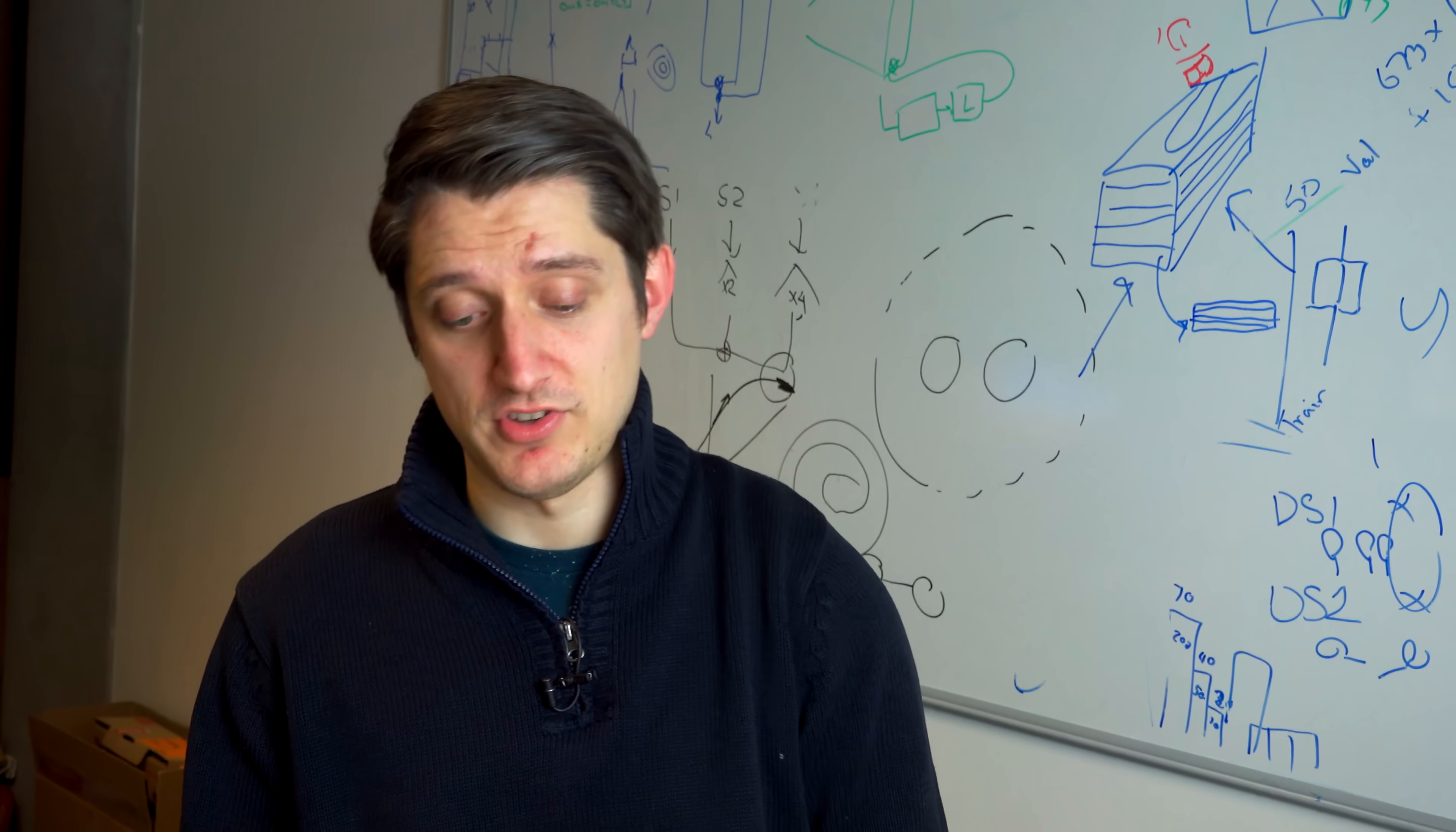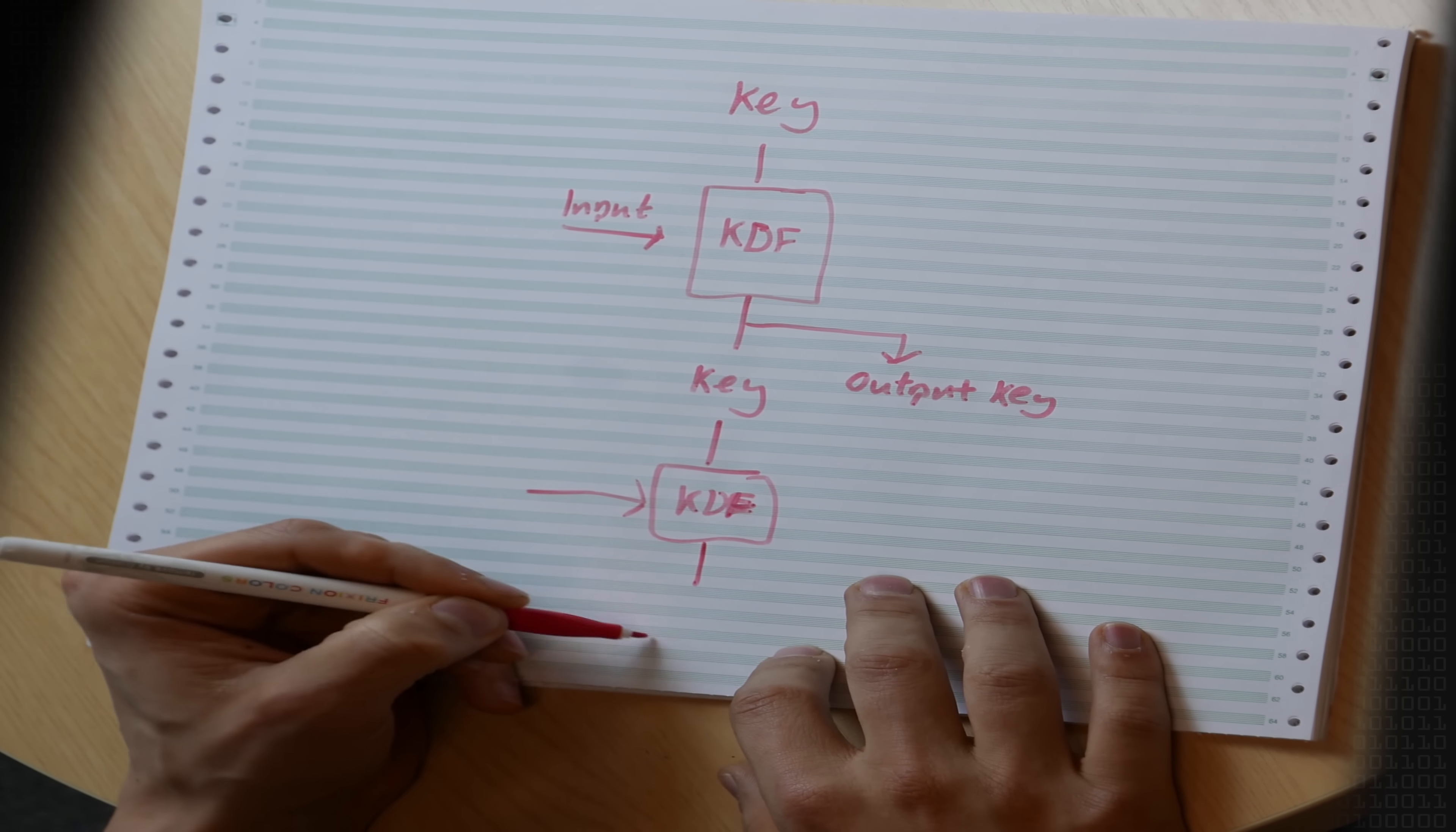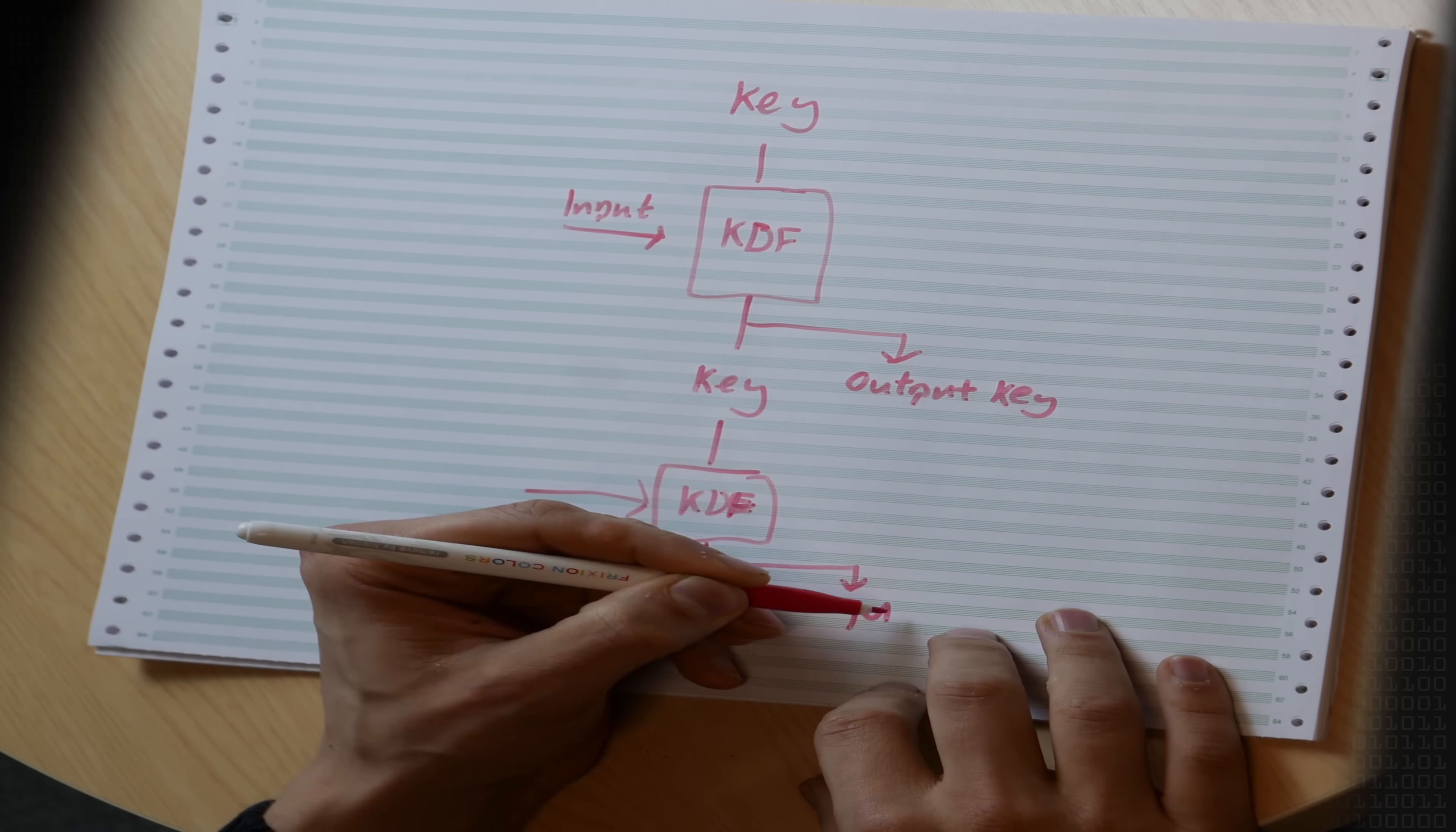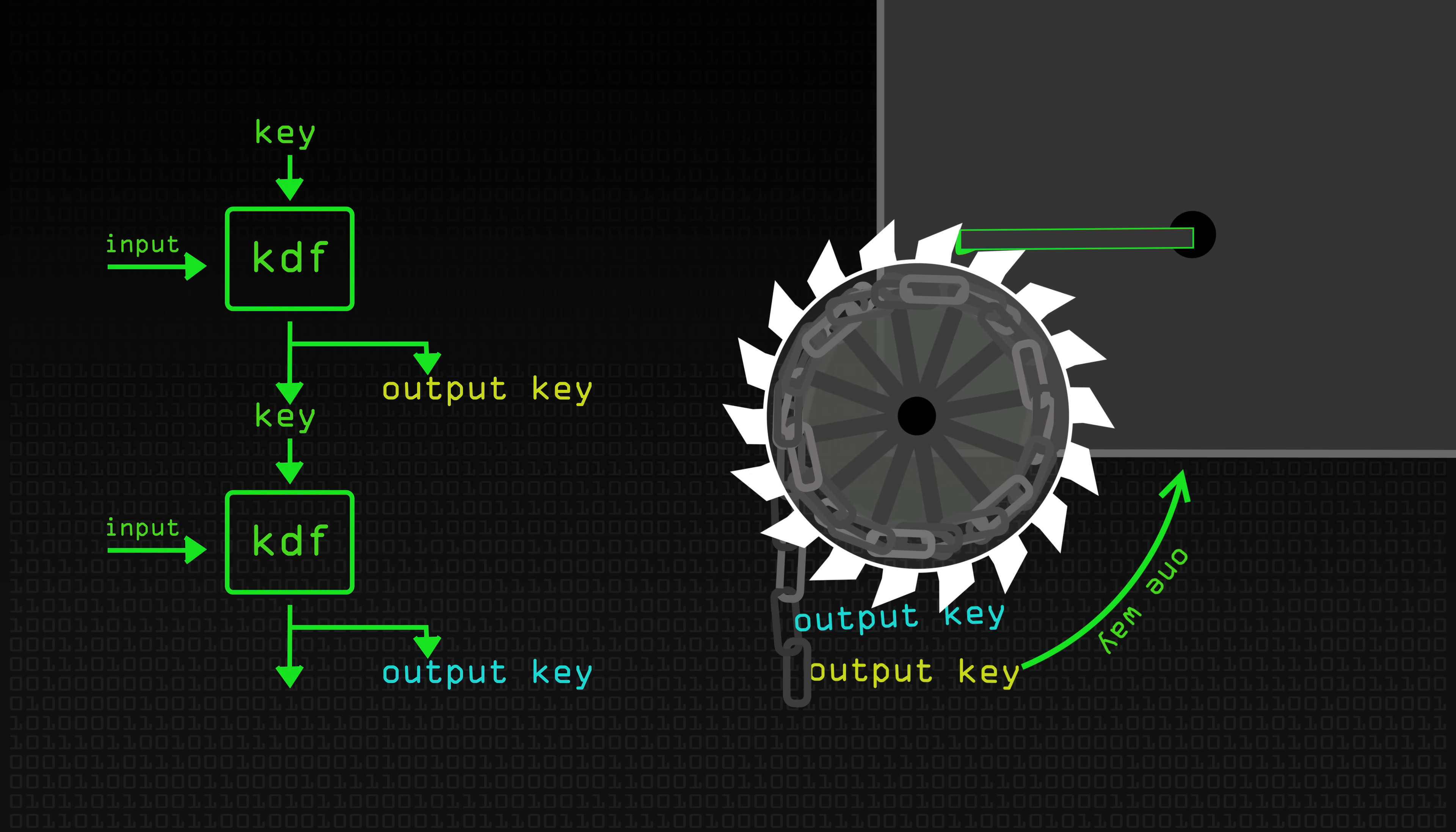Maybe we want to send another message. So we put this through the KDF again. This comes out with another key and another message key, and this goes on and on.